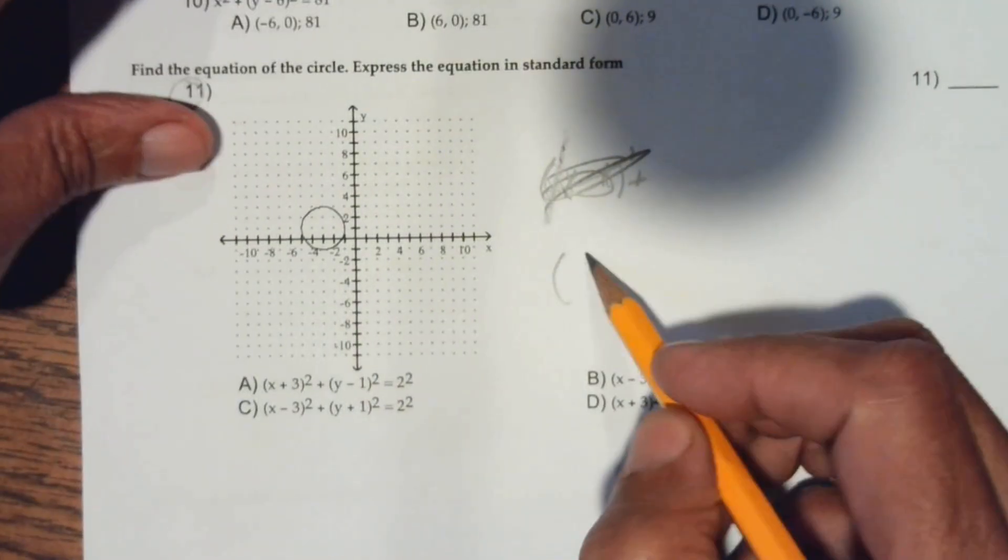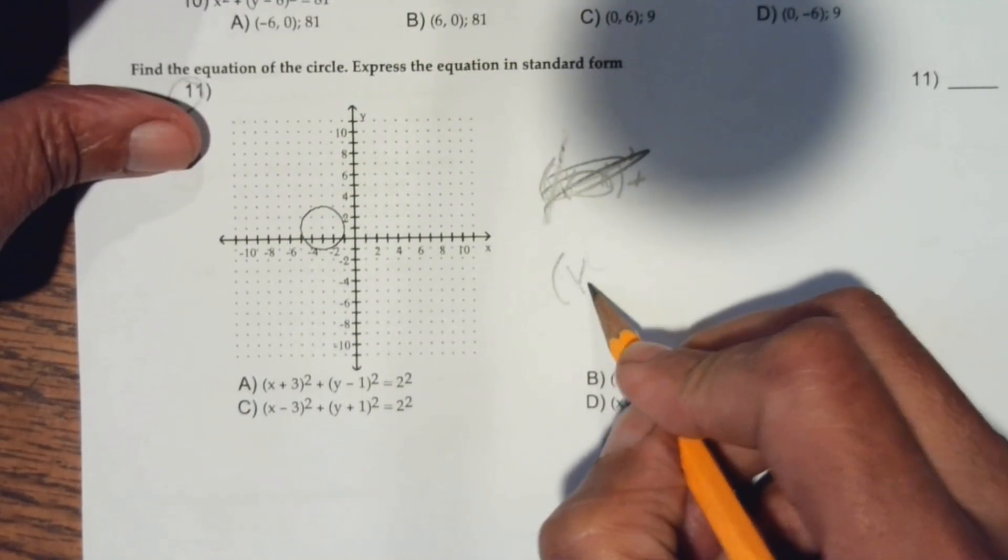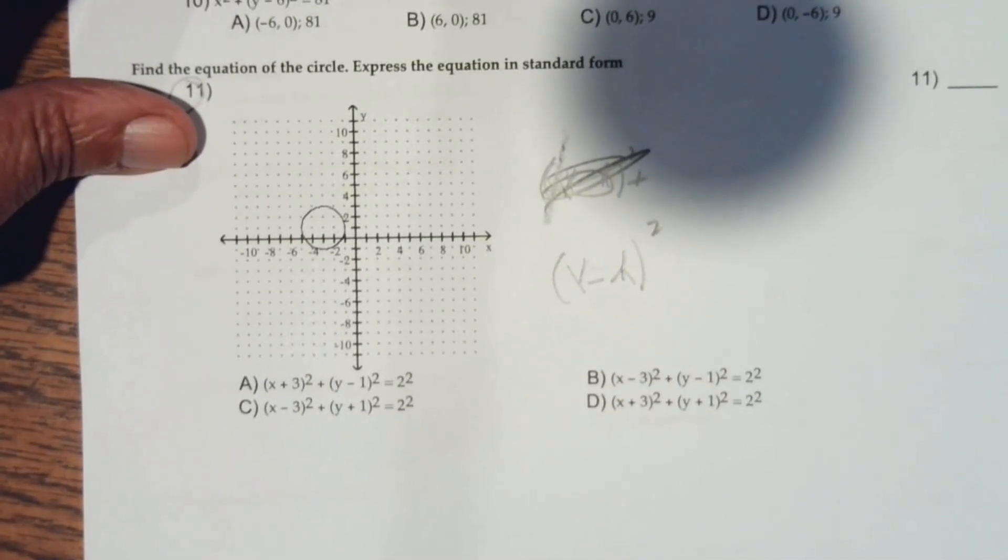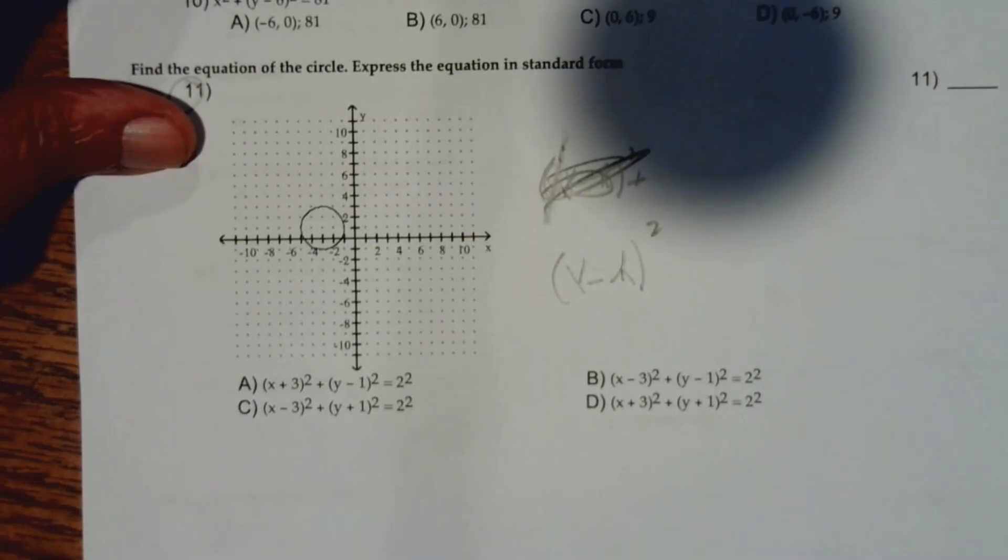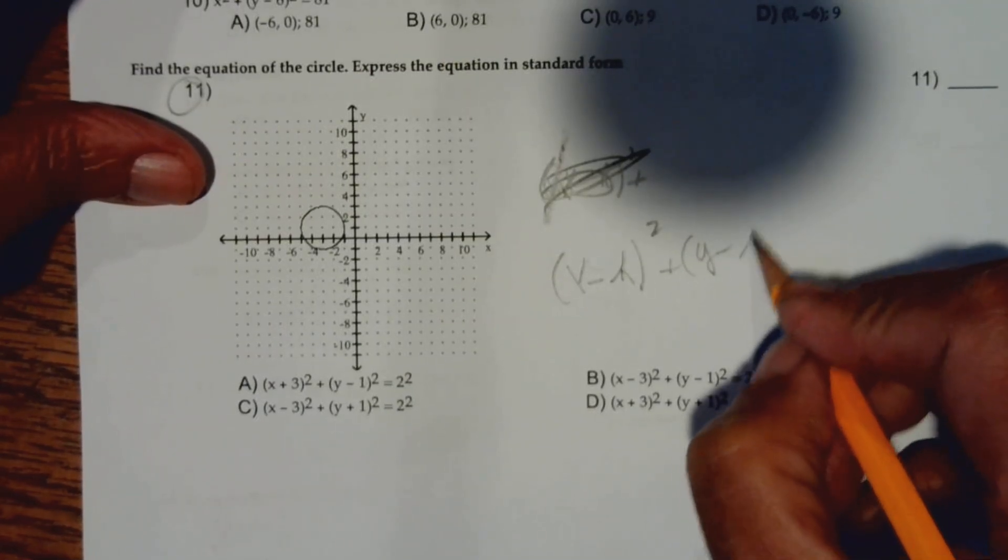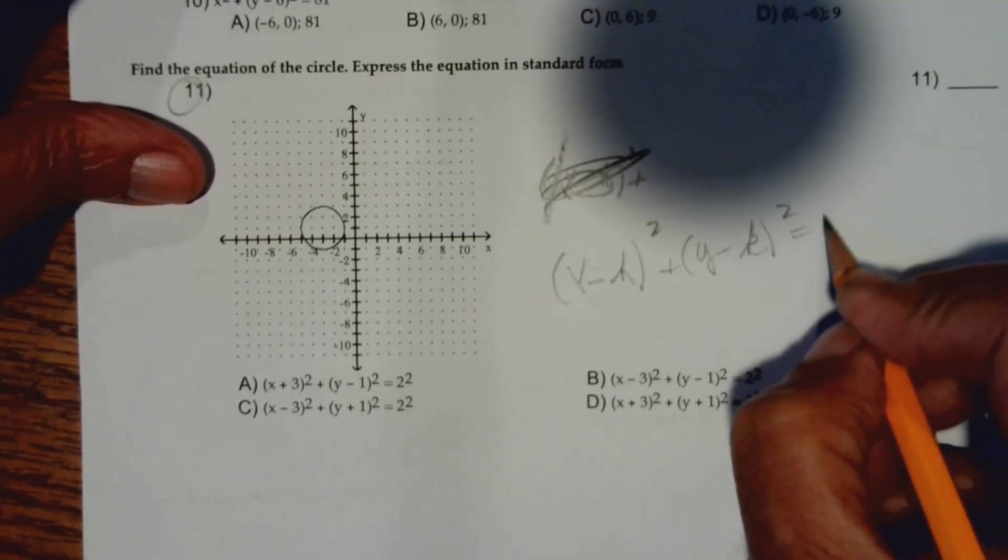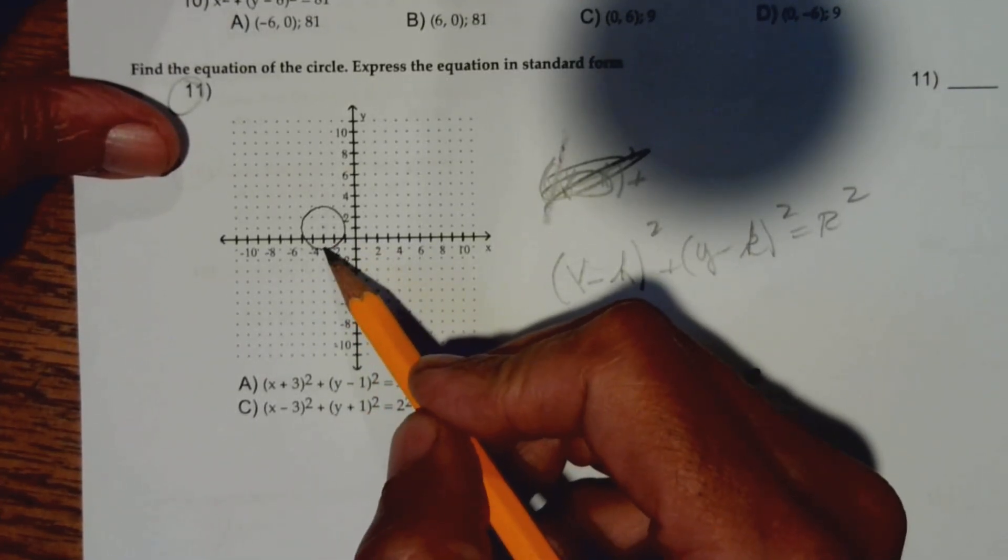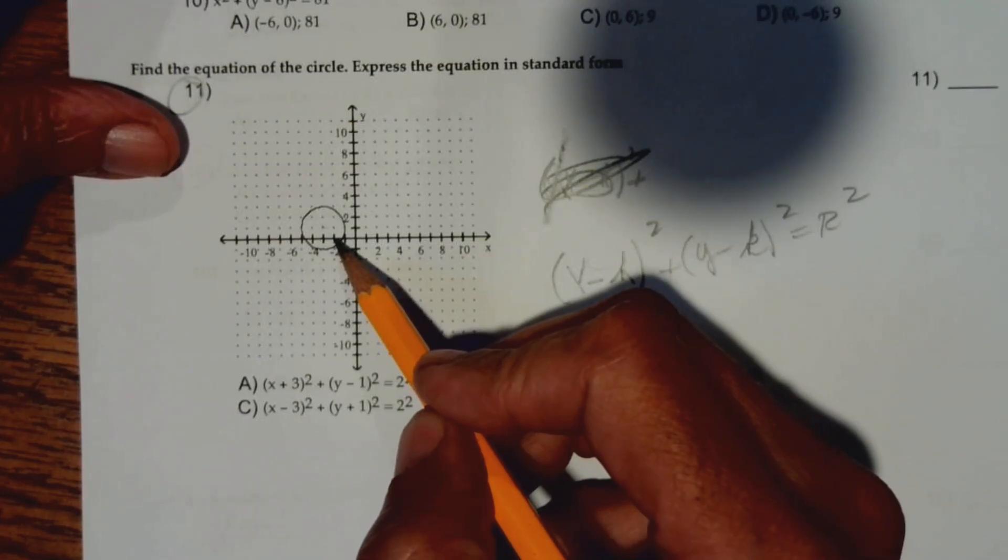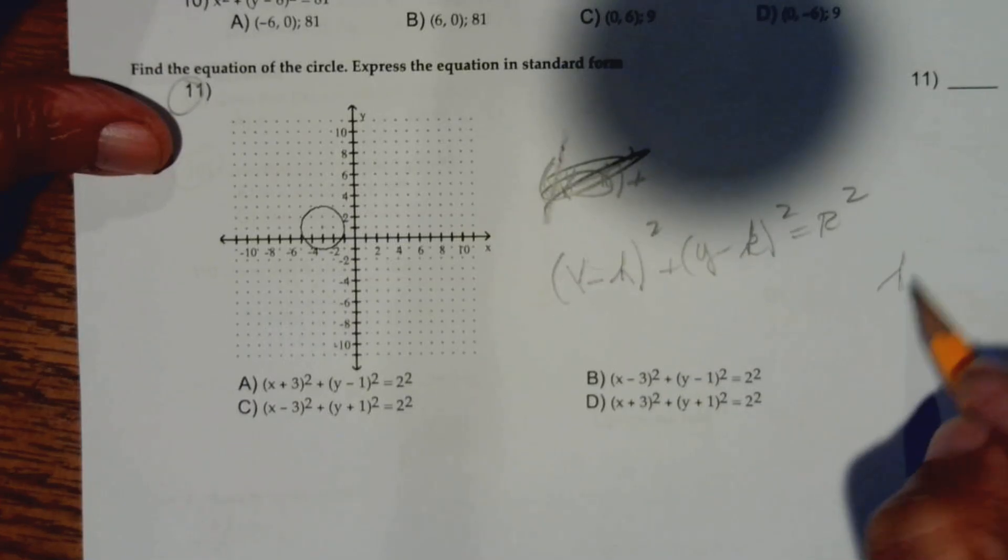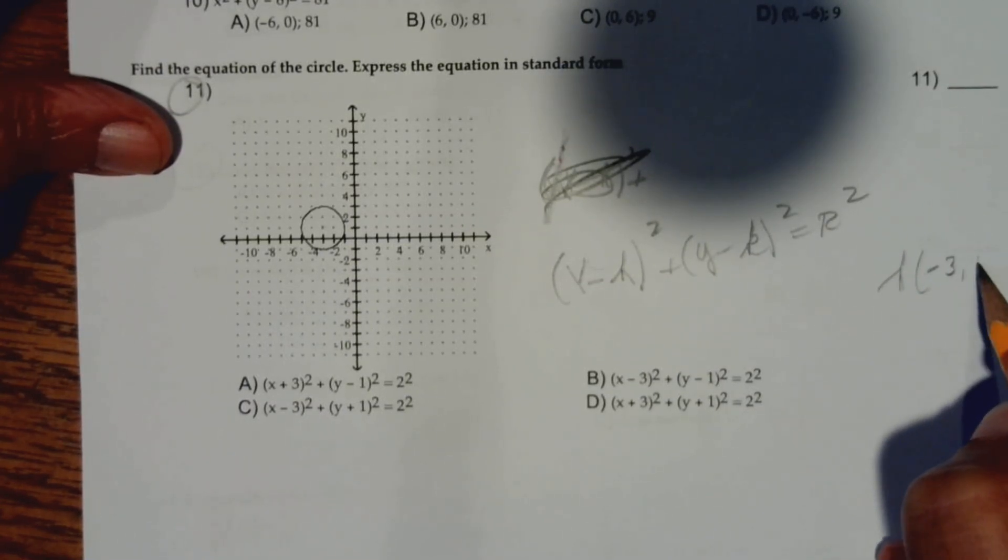The equation of a circle is (x - h)² plus (y - k)² equals r². So the center is (h, k). If you look at this, it's negative 1, negative 2, negative 3, positive 1. So the center of the circle is negative 3, positive 1.